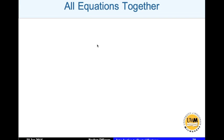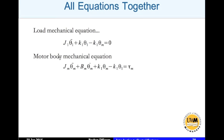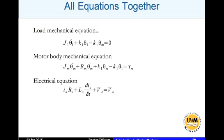Now we have all equations together. The load mechanical equation: J1 * theta_1-double-dot + K1*theta_1 − K1*theta_m = 0. The motor rotor mechanical equation: Jm * theta_m-double-dot + Bm*theta_m-dot + K1*theta_m − K1*theta_1 = tau_m. The electrical equation: I_a * R_a + L_a * (dI_a/dt) + VB = VA. And the coupling equations: VB = KE * theta_m-dot and tau_m = KT * I_a. These are the equations relating the mechanical and electrical sides of the brushless DC motor drive.